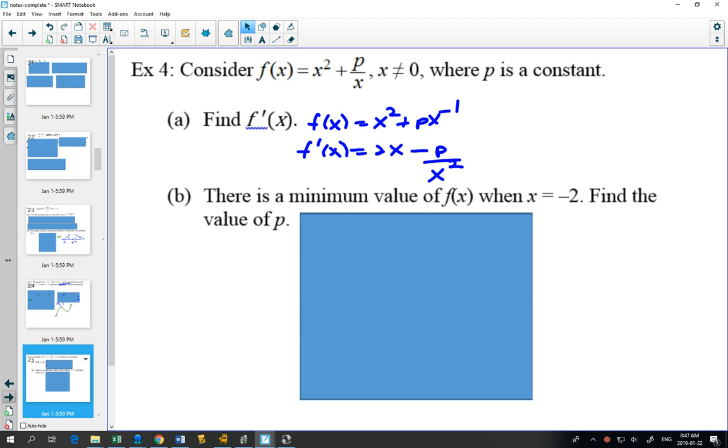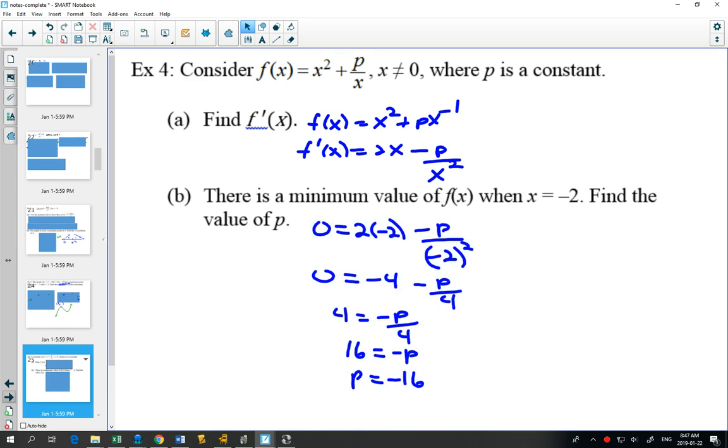There's a minimum value when x is equal to negative 2. So what does that mean? That means when you plug in negative 2, the derivative is going to equal 0. Because wherever you have a maximum or a minimum, your tangent has to be 0. So we can set our derivative equal to 0, plug in negative 2 for x, and the only thing we'll have to solve for is p.